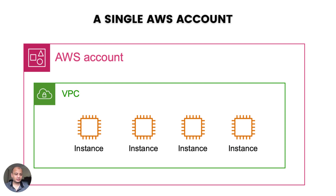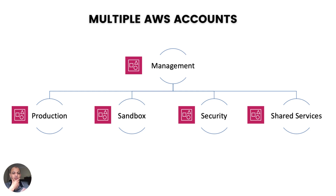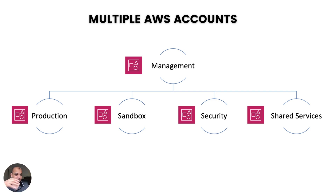You have this AWS account with resources, but what happens is more and more accounts get created. Customers usually start their journey with one account, but then they quickly want to create more. Usually what I have seen is customers have one management account used to govern all accounts and consolidate billing. Then you have a production account with all your main, mission-critical systems. Then you get a sandbox where developers can play around with new services and experiment.